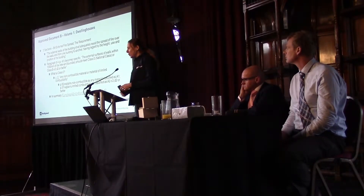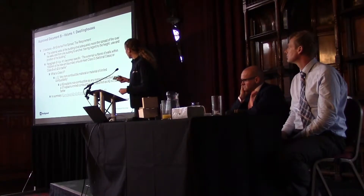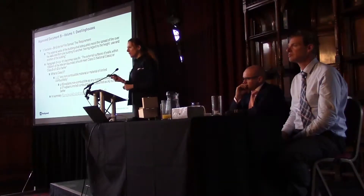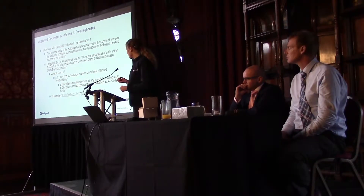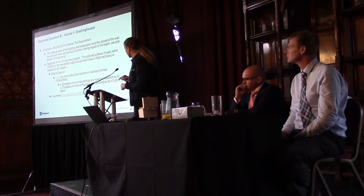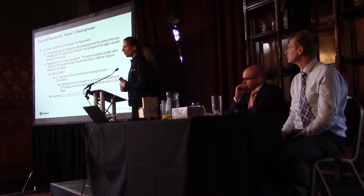Page 62, which is before page 63 where we now know what Class O is, explains what non-combustible is: any material classified as A1. Page 57, going back further, explains that limited combustibility is classified as A2, S3, D2 or better.